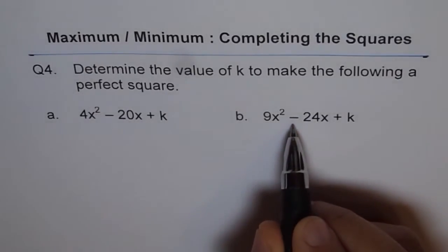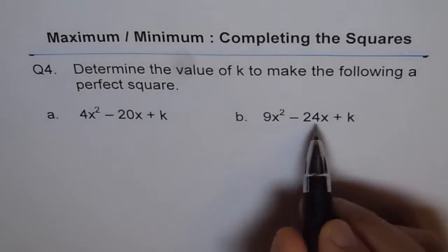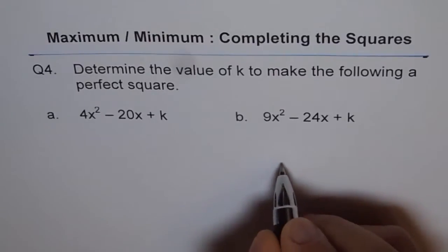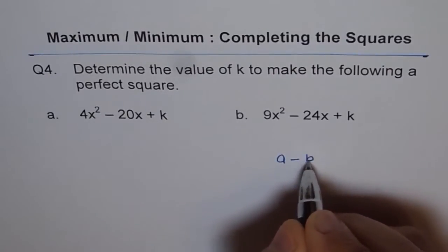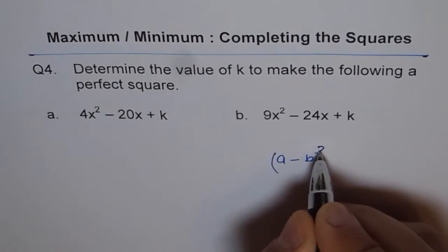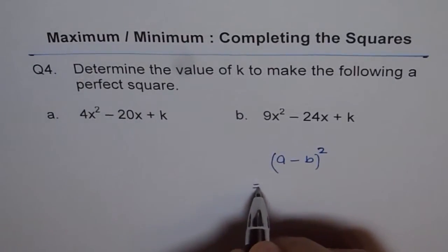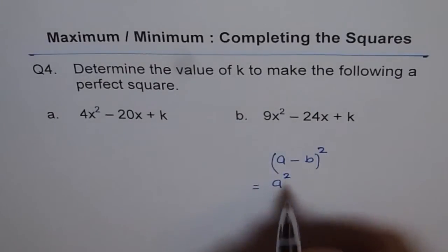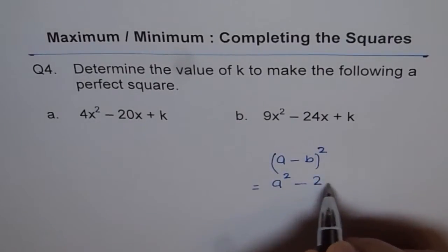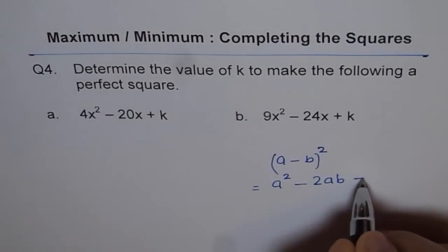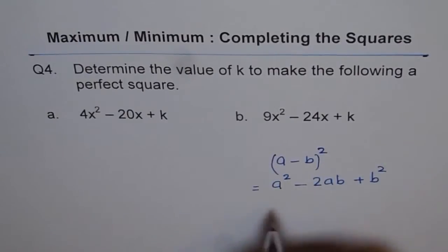So here we have minus in the trinomial. So this should be equal to a term like (A - B)². Now what is (A - B)²? (A - B)² is A² - 2AB + B². This is what (A - B)² is.